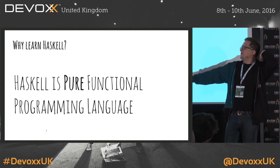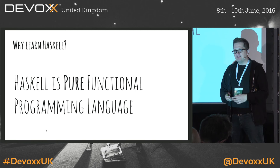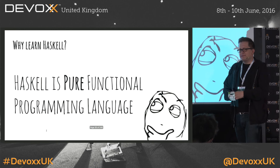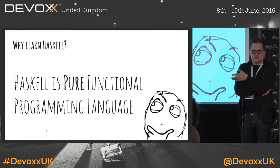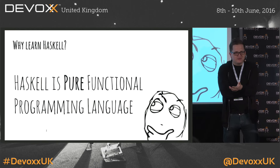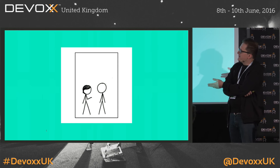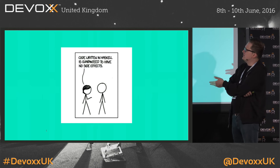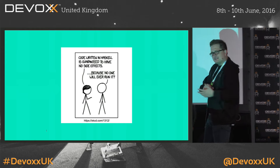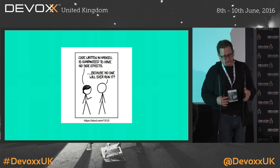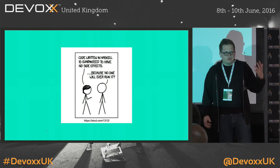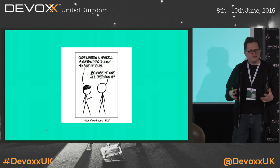So why learn Haskell? Because Haskell is a pure functional programming language, and hopefully I've convinced you that this is something worth putting your mind to. But there's a catch — if the syntax is easy and functional programming is so cool, why isn't everybody using it? There is a popular comic: the lady says 'code written in Haskell is guaranteed to have no side effects,' and the guy says 'because no one will ever run it.' If you have a function that takes input and provides output, it's cool to create modular, readable, maintainable code — but the world is not like that. The world is constantly changing.